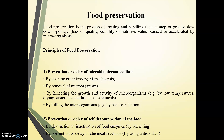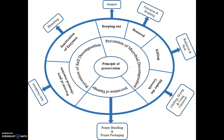The first principle of food preservation is prevention of microbial decomposition — that is, prevention or delay of microbial decomposition. This can be achieved by keeping out microorganisms, or asepsis. Asepsis is a state of being free from disease-causing microorganisms such as pathogenic bacteria, viruses, fungi, and parasites.